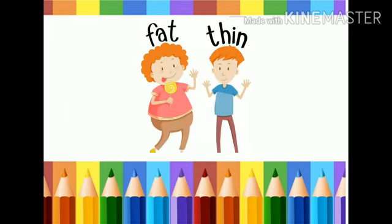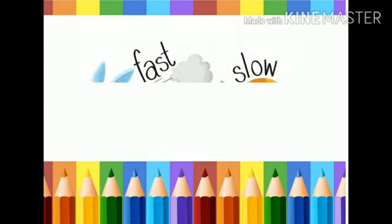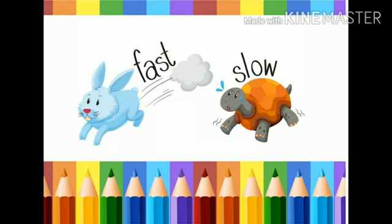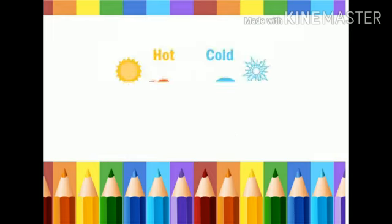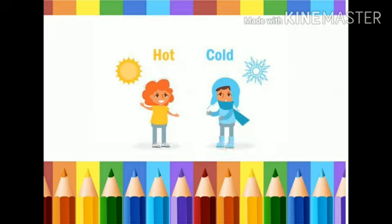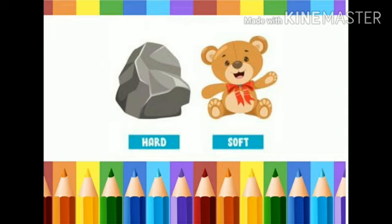Sixth one: fat and thin. Seventh one: fast and slow. Eighth one: hot and cold. Ninth one: hard and soft.